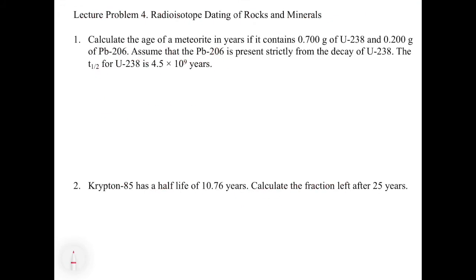Here is an example of radioactive dating with rocks and minerals. Calculate the age of a meteorite in years if it contains 0.7 grams of U-238 and 0.2 grams of lead-206. Assume the lead-206 is present strictly from the decay of U-238. The T½ for U-238 is 4.5 × 10⁹ years. To figure out the age, we need the equation: ln(N_t / N_0) = −kt. To get k, we use the half-life.